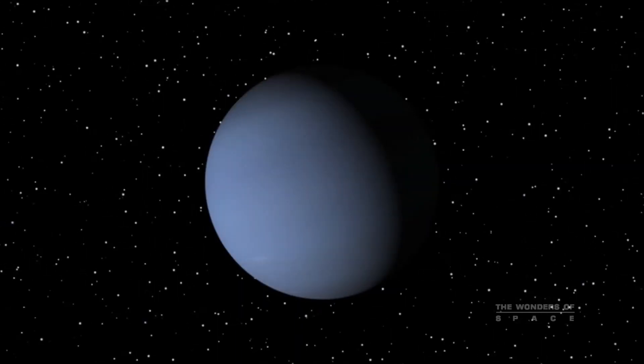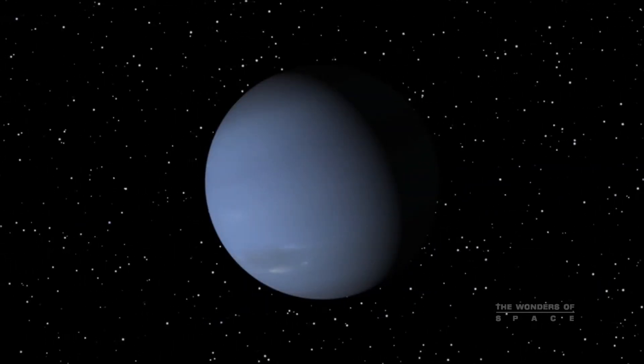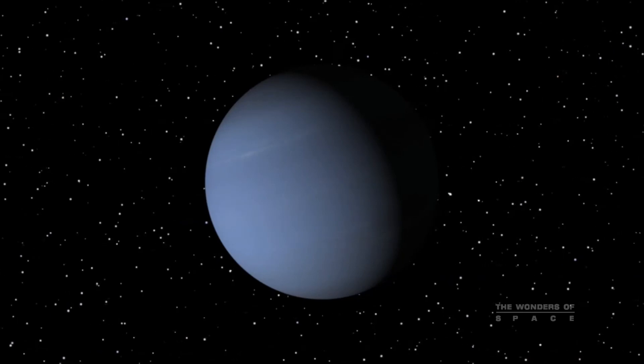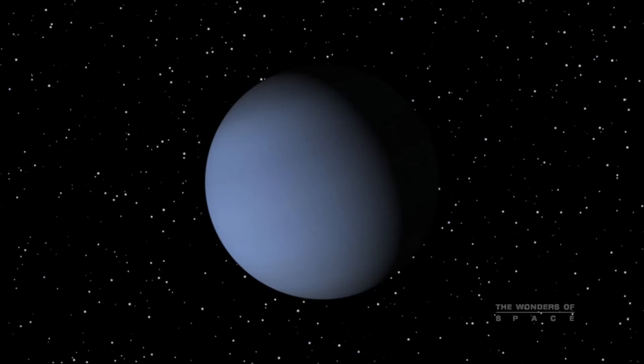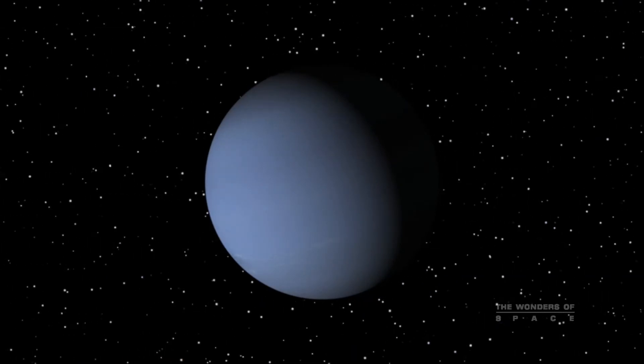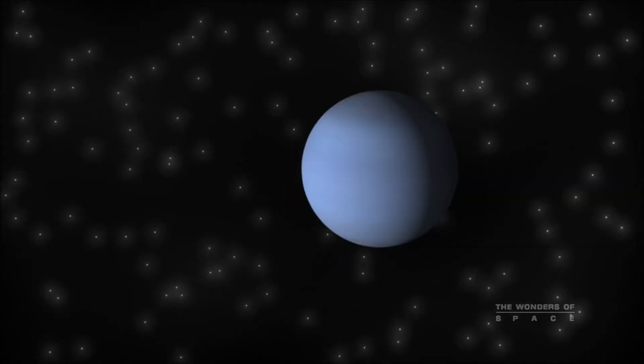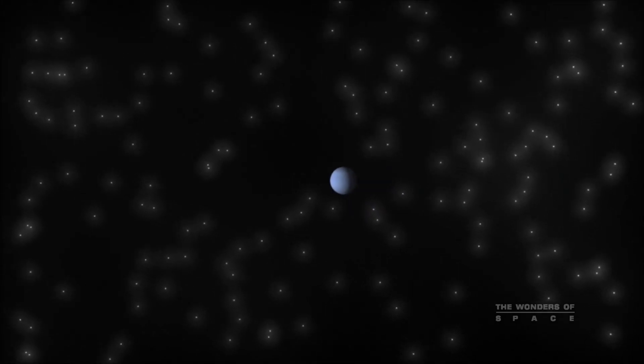Neptune is a blue world. It is the smallest of the giant planets in our system, but still 30,000 miles in diameter. Since the demotion of Pluto, it is the furthest planet from the Sun.